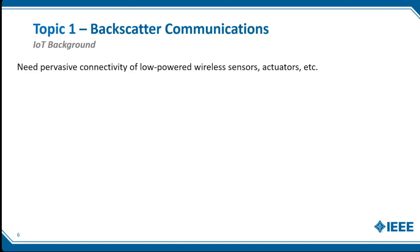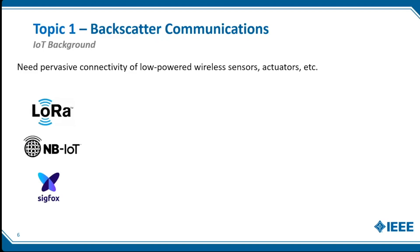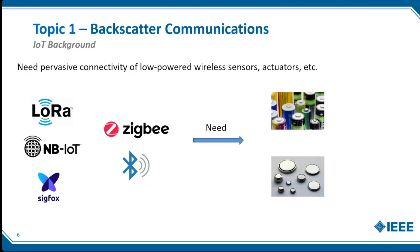For the IoT background, we know there are a lot of IoT devices out there, and we need pervasive connectivity of low-power sensors and actuators to enable all types of smart applications. There are available systems for long-range communication such as LoRa, NB-IoT, and Sigfox, covering kilometer-scale ranges, as well as indoor systems widely used like Bluetooth and ZigBee.